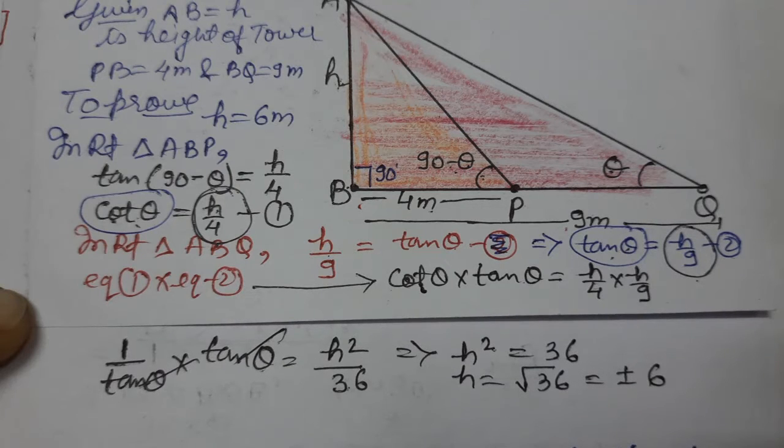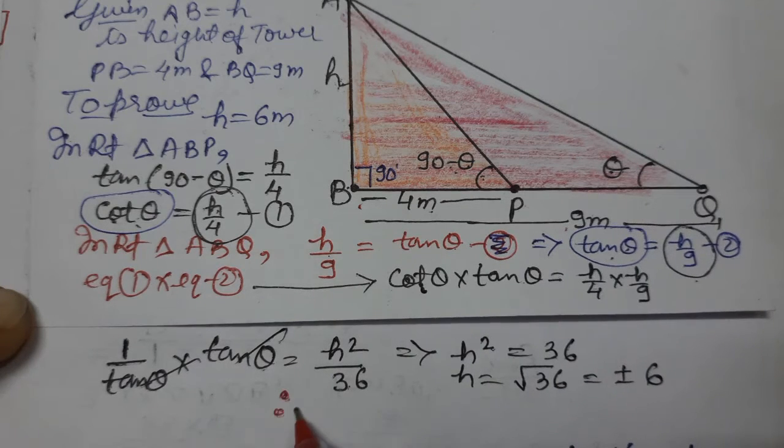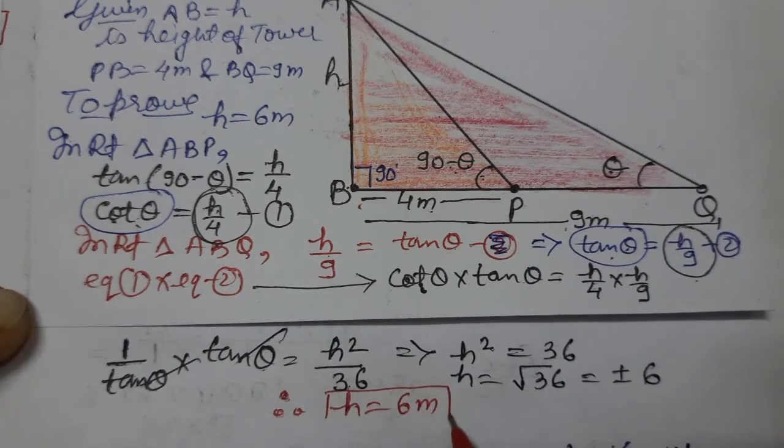Taking the square root of 36, we get h equals plus or minus 6. Now you can see the height cannot be negative, so we reject minus. Therefore, h equals 6 meters, and this was the height.